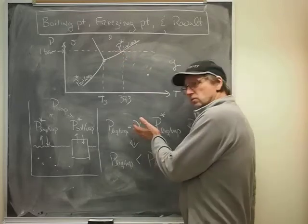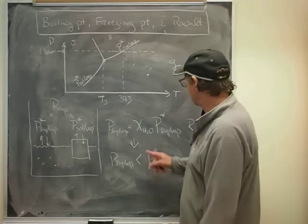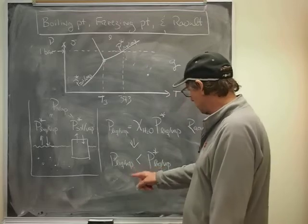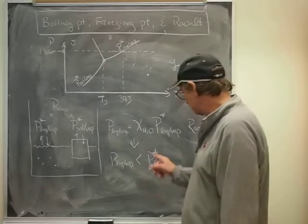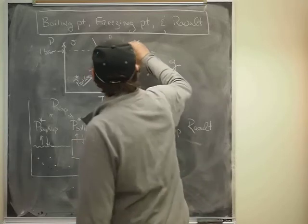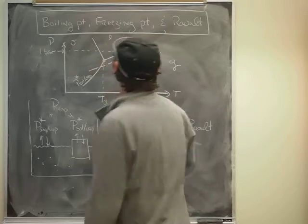And the mole fraction of water in a salty solution is smaller than one. So what we see is that the equilibrium vapor pressure of the water is smaller than P star.